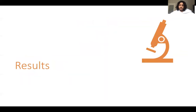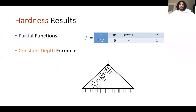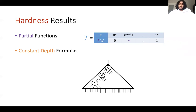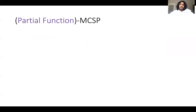So what results do I have regarding MCSP? There are two hardness results. The first is with regards to partial functions — what if you consider MCSP on partial rather than total functions? The second is: what if we restrict our model down to the constant-depth formula model? Can we prove hardness for this?